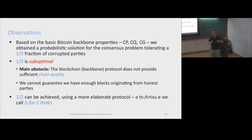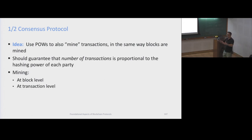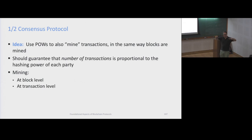Essentially, you want to combine two proofs-of-work in one. We're going to limit the adversary not just in generating blocks but also at the application level. If they want to insert an input value, they have to solve a second proof-of-work. That calms things down and makes the adversary less powerful. So with two proofs-of-work, we can achieve the optimal bound.